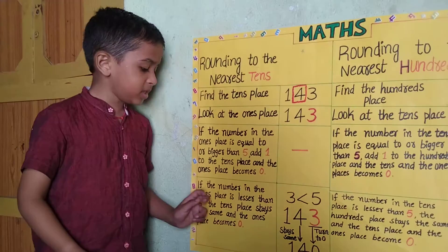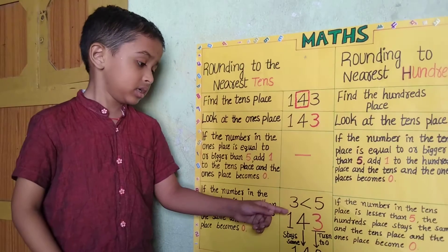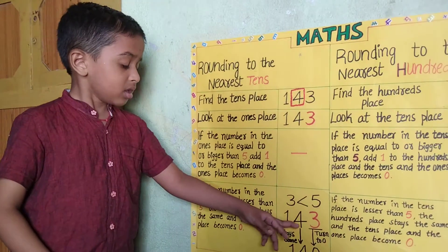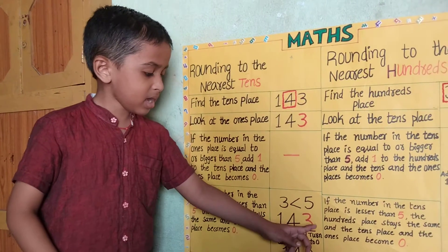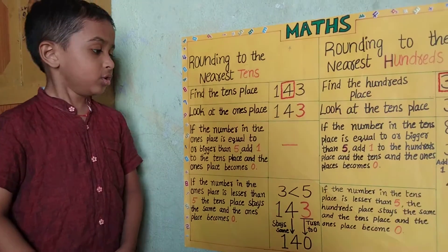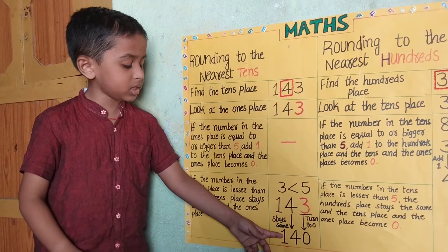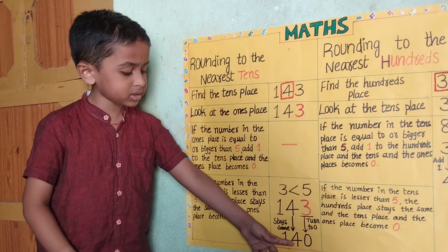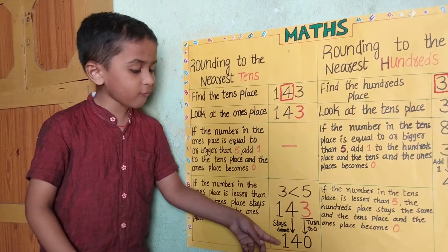If the number in the tenth place is less than 5, the tenth place stays the same and the one place becomes 0. So the nearest number is 140.